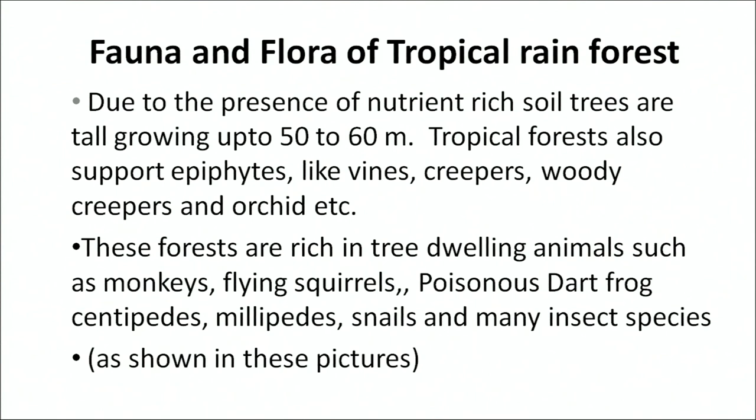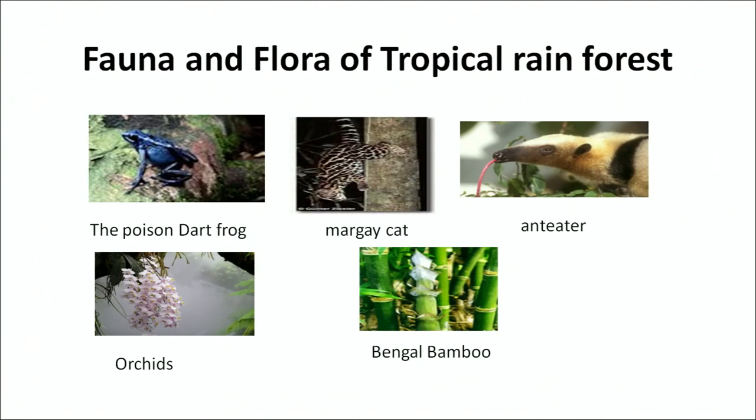These forests are rich in tree-dwelling animals such as monkeys, flying squirrels, possums, dart frogs, centipedes, millipedes, snails and many insect species. These are some examples which are found in the tropical rainforests as already discussed.